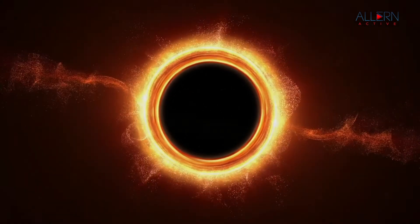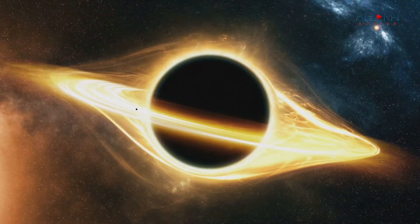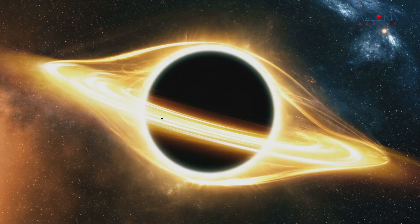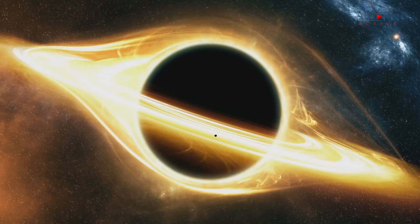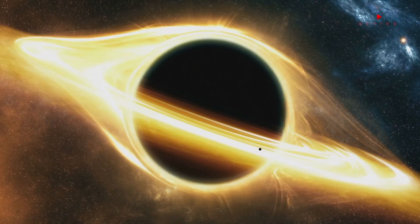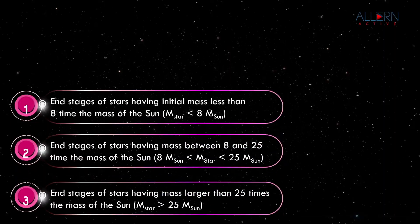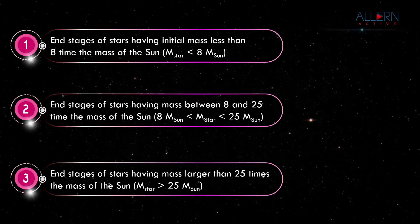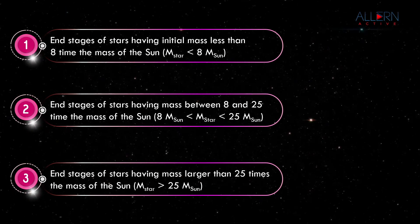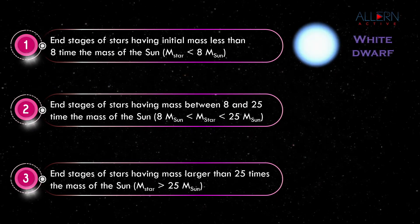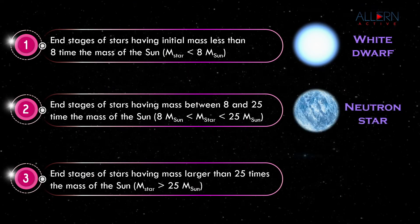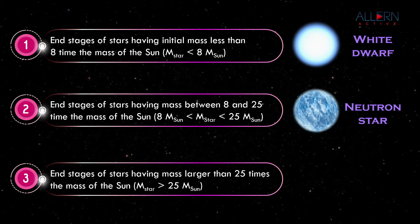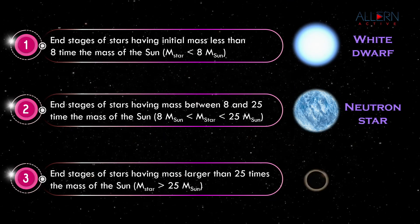Any light falling on these stars does not get reflected and gets absorbed inside the star, so we cannot see the star at all — we can probably only see a minute black hole at its place. This end state of the star is therefore called a black hole. Thus, depending on the mass, there are three end stages of stars: for stars with initial mass less than 8 times the mass of the Sun the end stage is a white dwarf; for stars with mass between 8 and 25 solar masses the end stage is a neutron star; and for stars with mass larger than 25 solar masses the end stage is a black hole.